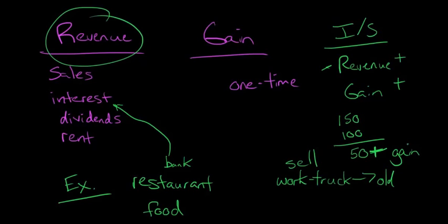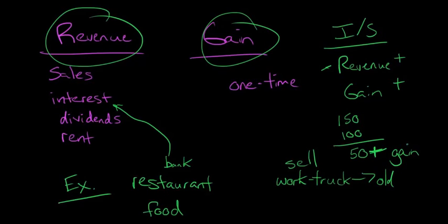But what we're doing, we're kind of separating these things out on the income statement so that investors or whoever knows, okay, well, the gain really, this is something that really isn't related to the core operations of the firm. You own a restaurant. You don't make money buying and selling work trucks. That's not why you got the work truck.